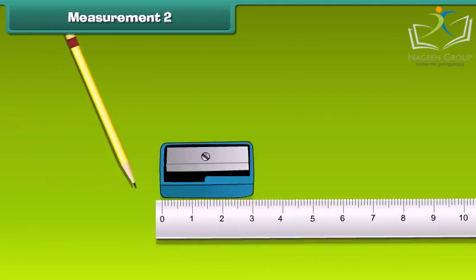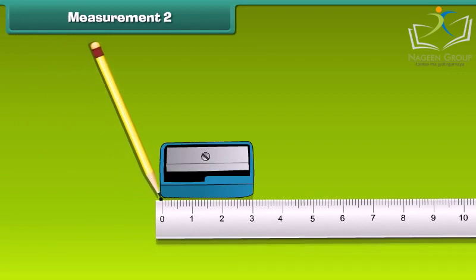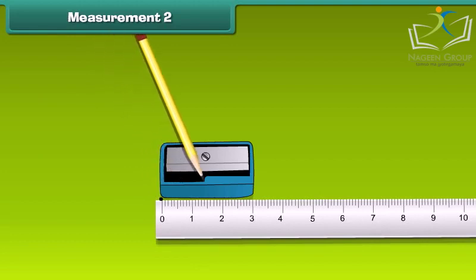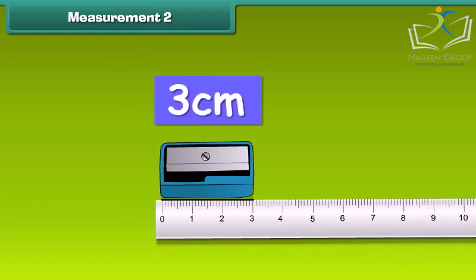Now let us measure a pencil sharpener. Place the sharpener near a scale as its one end is at 0. The other end of the sharpener is at 3. Therefore, the length of this sharpener is 3 cm.